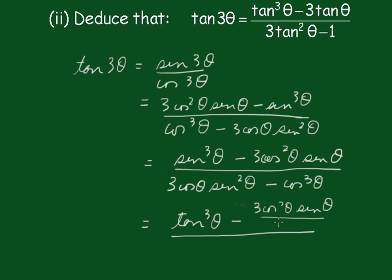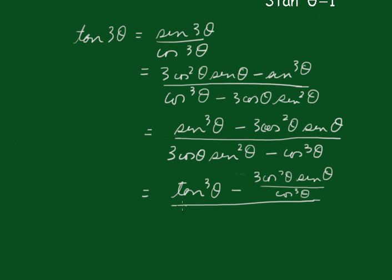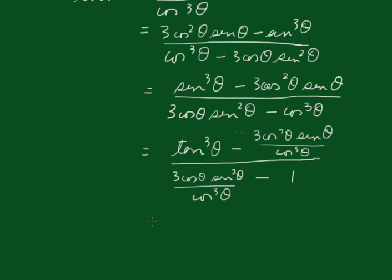All over cos³θ — when setting this out in an examination you should show the examiner what you're doing here, otherwise they might think you fudged it. That gives 3cosθ sin²θ over cos³θ, which equals 1. Then cos² cancels giving sin/cos, which is tan, so that's 3tan²θ. And dividing the denominator: sin²/cos² gives tan², so that's 3tan²θ minus 1.